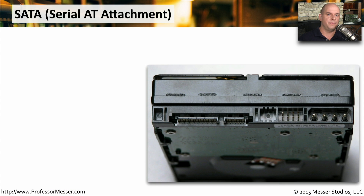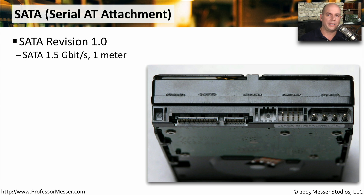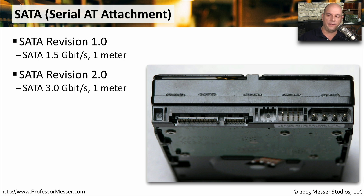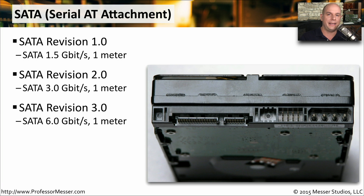For storage devices, you'll commonly connect to a SATA interface — Serial AT Attachment. SATA version 1.0 ran at 1.5 gigabits per second with a cable length of about one meter. SATA Revision 2.0 doubled the speed to 3 gigabits per second, still with a one meter cable. SATA Revision 3.0 again doubled the speed to 6 gigabits per second over that same one meter cable.